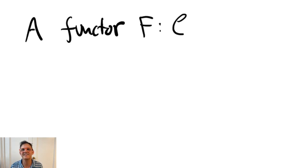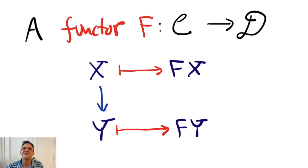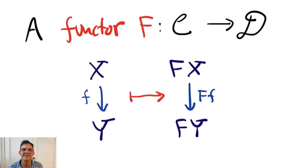A functor, call it capital F, from a category C to a category D, sends objects and morphisms in C to objects and morphisms in D. So if X and Y are objects of C, you have objects Fx and Fy in the category D. And if you have a morphism from X to Y, it gets assigned to a morphism from Fx to Fy. You can economically summarize this as sending morphisms to morphisms as pictured.